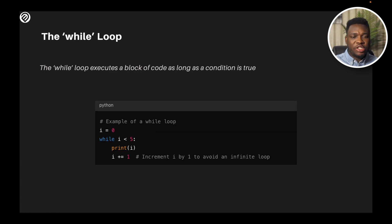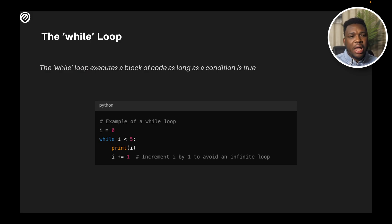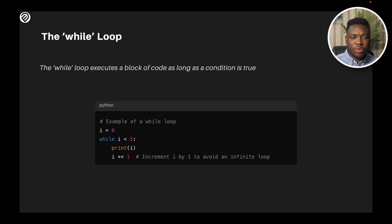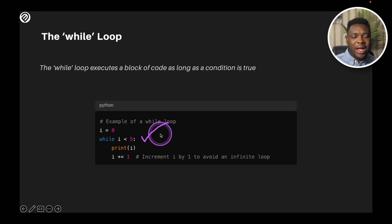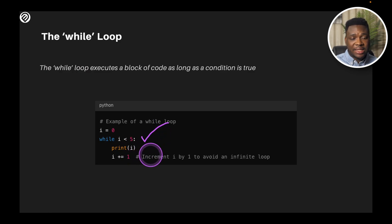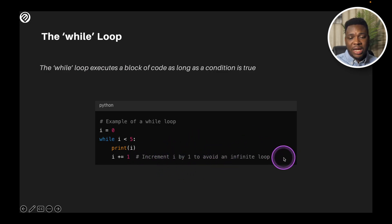The while loop executes a block of code as long as a condition is true. It's quite different from the for loop, because the for loop just iterates over a list, set, or tuple, while the while loop looks for conditions. As long as the condition is true, it's going to execute the block of code. But once the condition becomes false, it's just going to break. We're going to put a calculation here to increment by one to avoid an infinite loop.